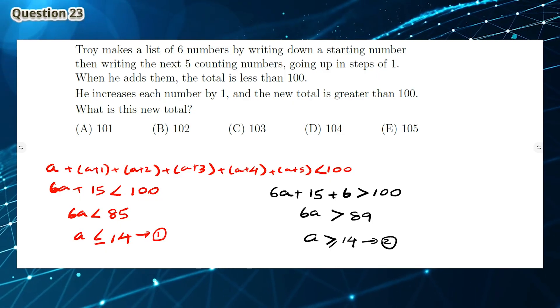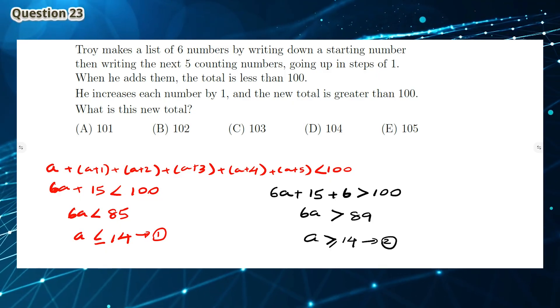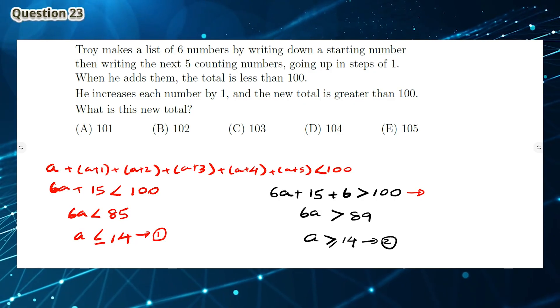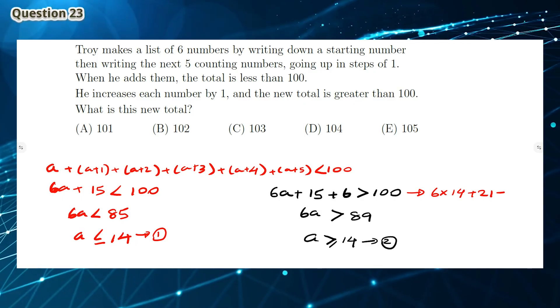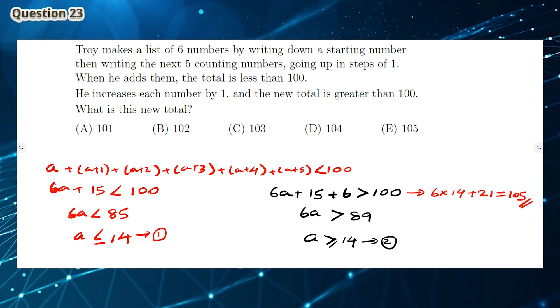To find the new total, we solve it into the equation 6A plus 15 plus 6. To find that the new total is 105. This means the answer is E.